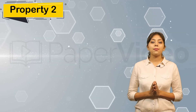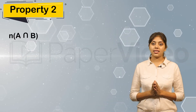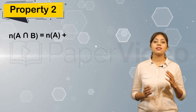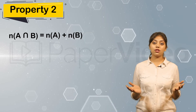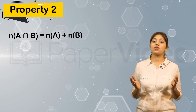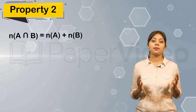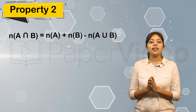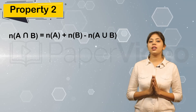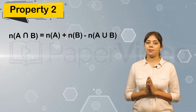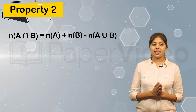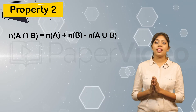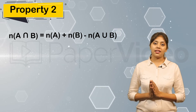The second property says that the cardinality of the intersection of two sets A and B is equal to the cardinality of set A plus the cardinality of set B minus the cardinality of the union of sets A and B. Let us understand this property with the help of a Venn diagram.